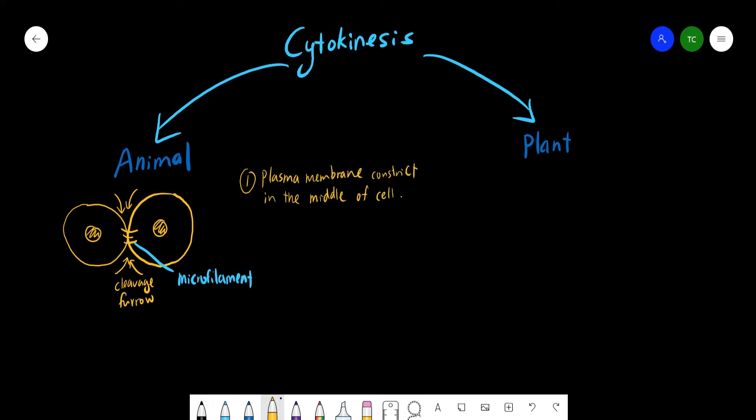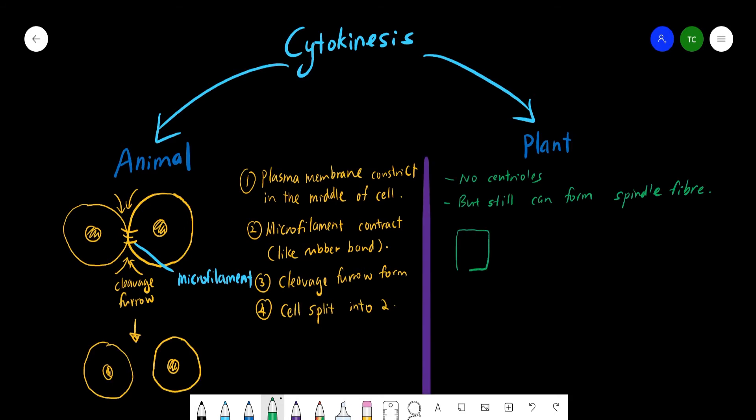Number one: plasma membrane constricts in the middle of the cell, caused by the microfilament contraction. So microfilament is just like a rubber band. The contraction of microfilament and the cleavage furrow will form, so the cell splits into two.